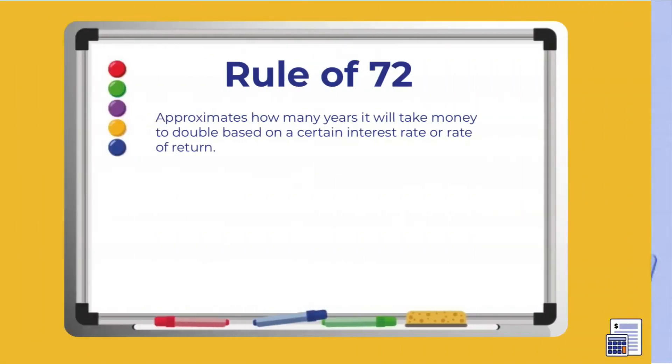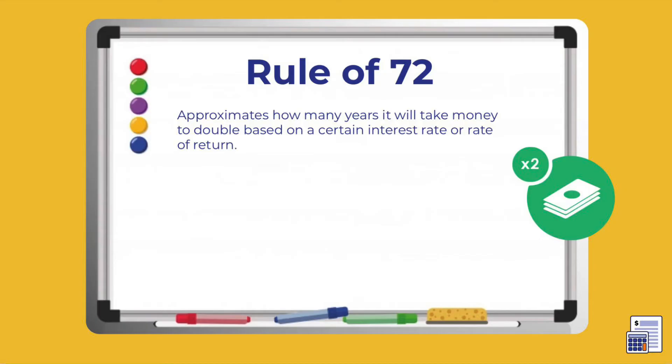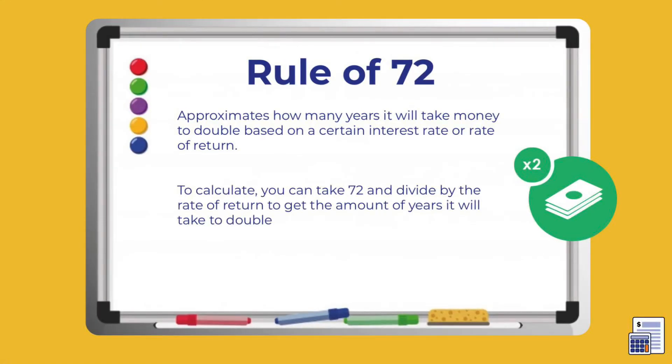We will be practicing writing function notation using the Rule of 72. This general rule of thumb approximates how long it will take for your money to double in an account given a certain annual rate of return. You can calculate how many years it will take to double your money by taking 72 and dividing by your rate of return.